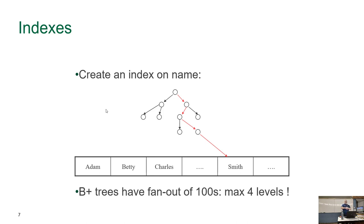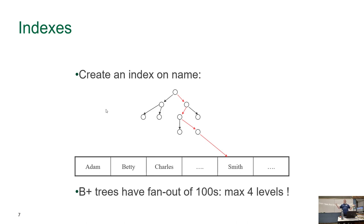The way B-trees work is they take the values in the table and divide them over and over again. For example, if you're guessing a number between one and ten, what's the first number you guess? Five. Then you're told higher or lower. Next guess is three or seven — and you basically have the answer. B-trees work similarly: they take data, divide it, so the first division might be A-to-M and N-to-Z, the next level might be A-to-E and F-to-M, and so on.